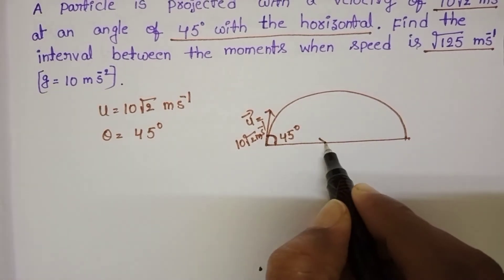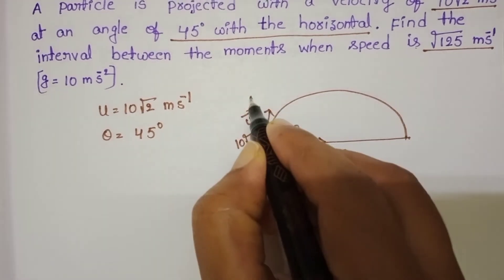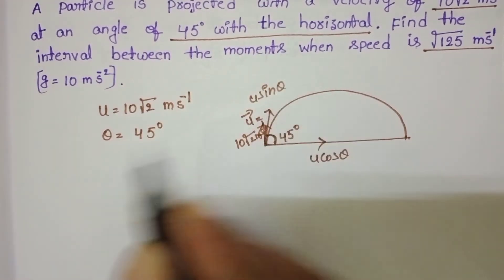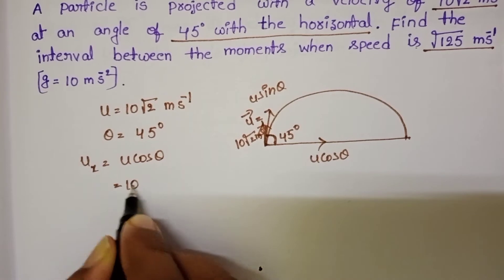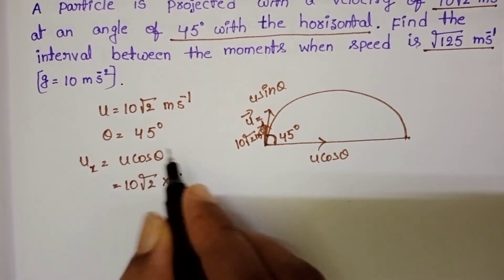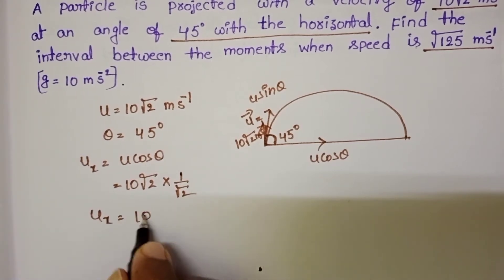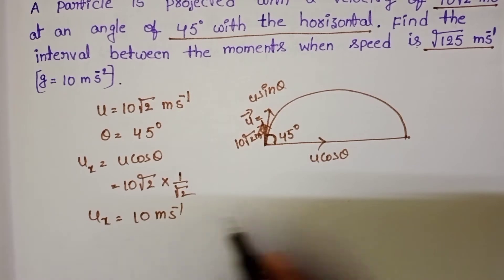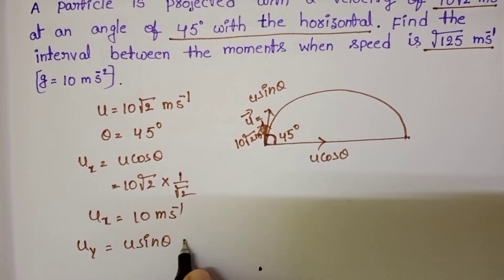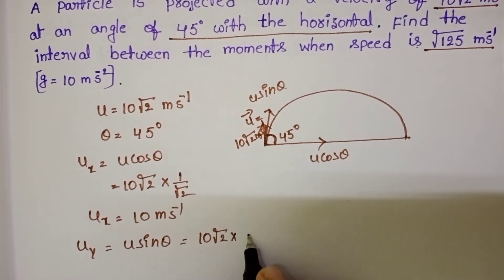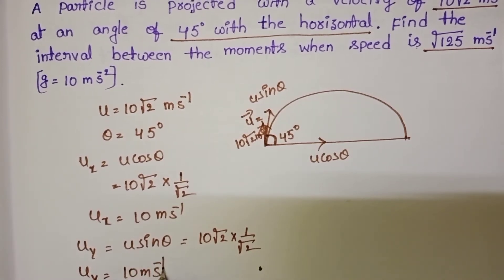The horizontal component of velocity is ux = u·cos θ = 10√2 × cos 45° = 10√2 × (1/√2) = 10 meter per second. The vertical component of velocity is uy = u·sin θ = 10√2 × sin 45° = 10√2 × (1/√2) = 10 meter per second.